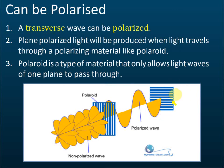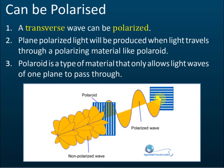If you put a second polaroid in front of the first one, and the slit of this second polaroid is at right angles to the first — the first is vertical and the second is horizontal — then the wave vibrating up and down cannot pass through the second polaroid, which only allows left-right vibrations through. Therefore no wave can pass through the second polaroid.